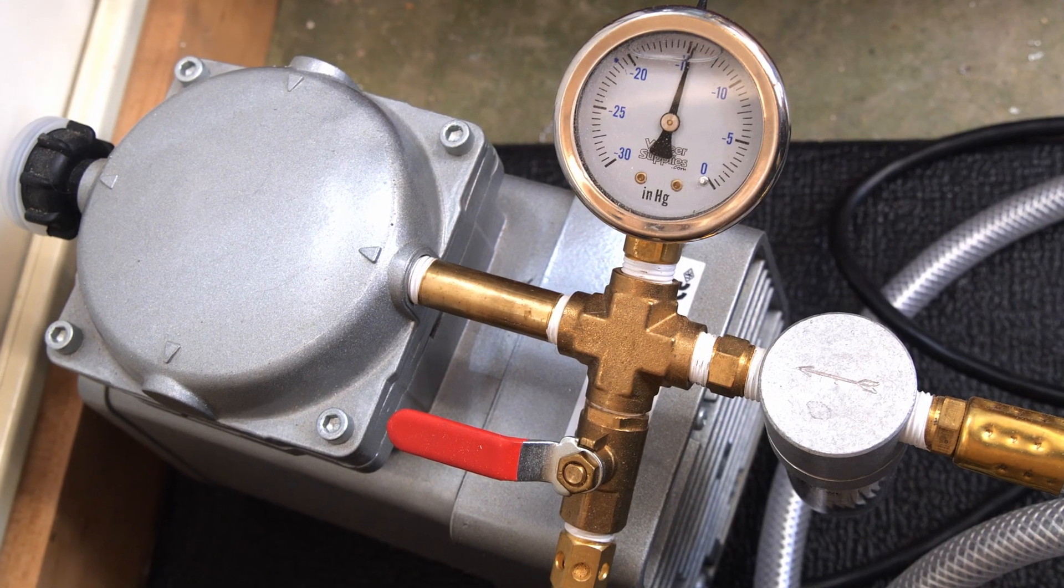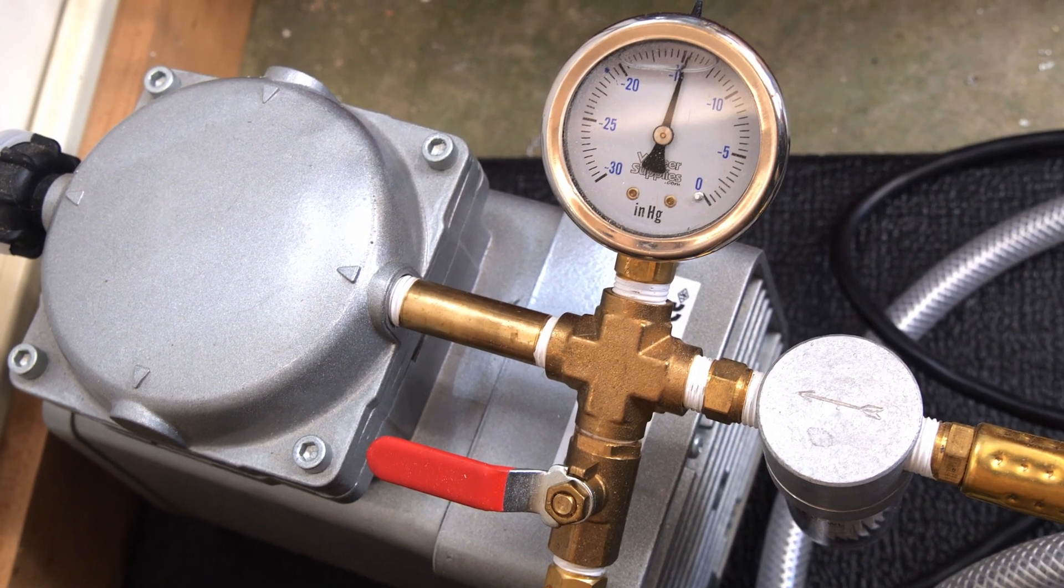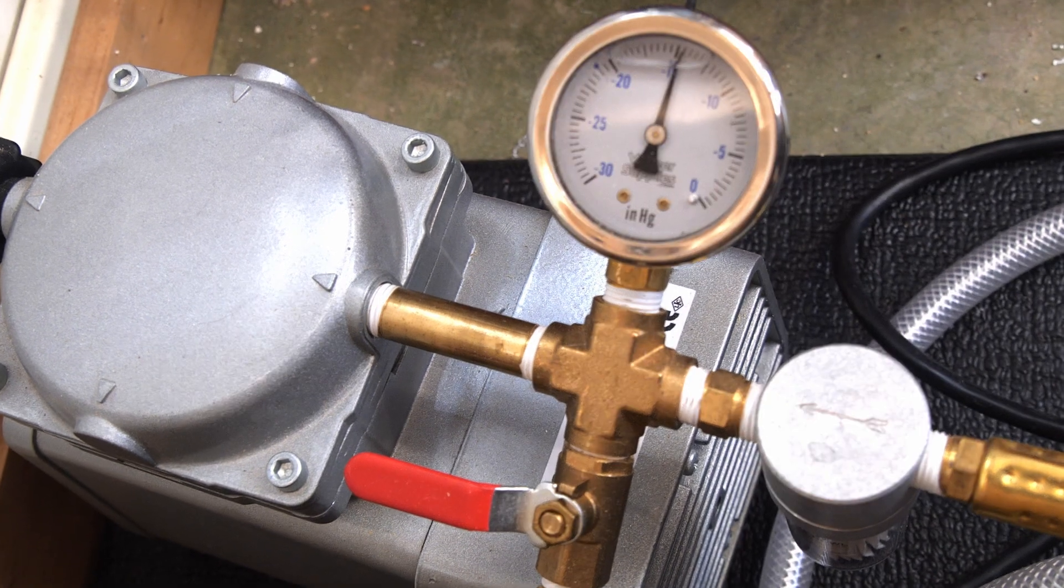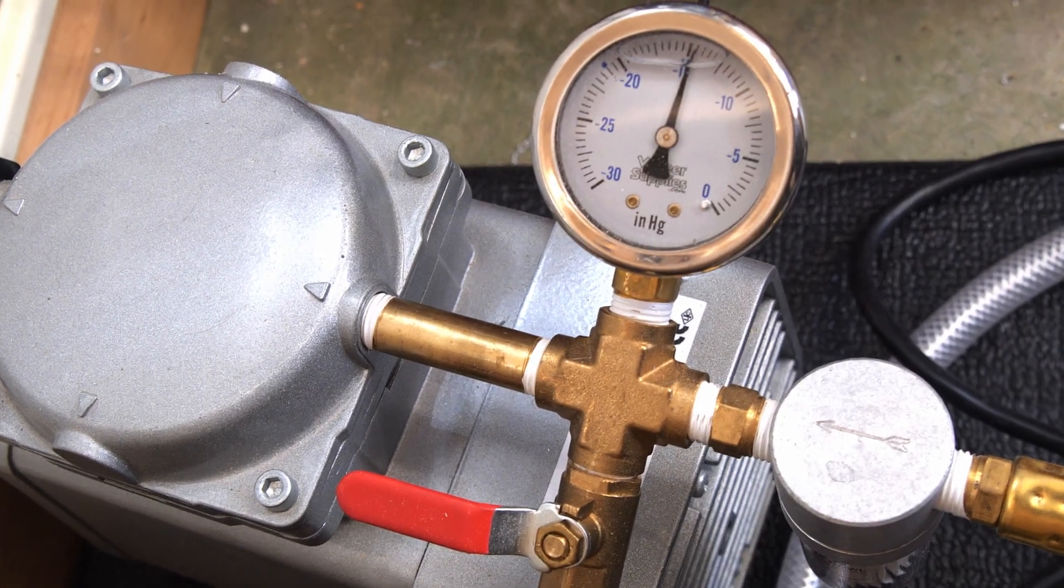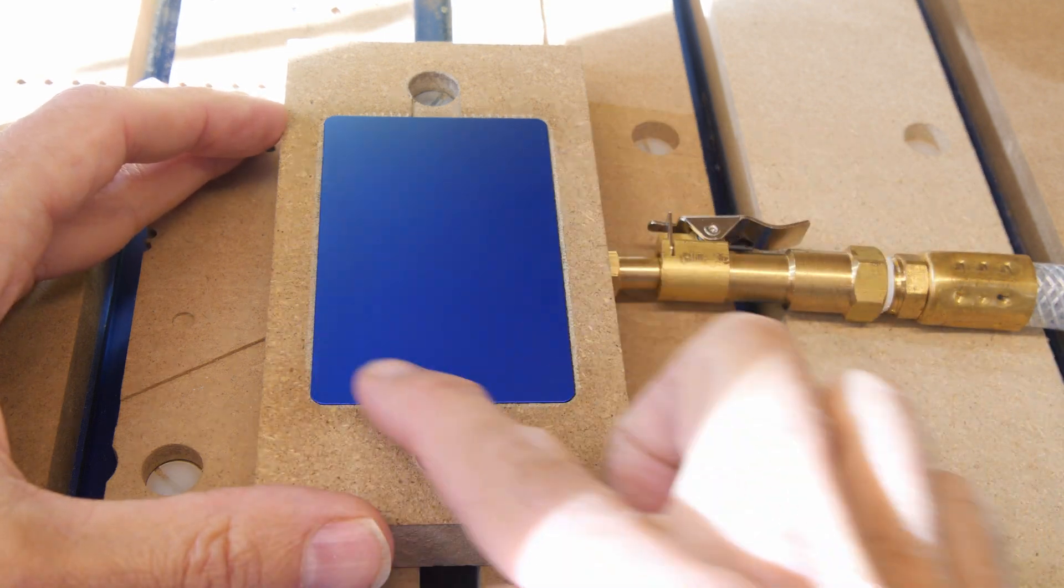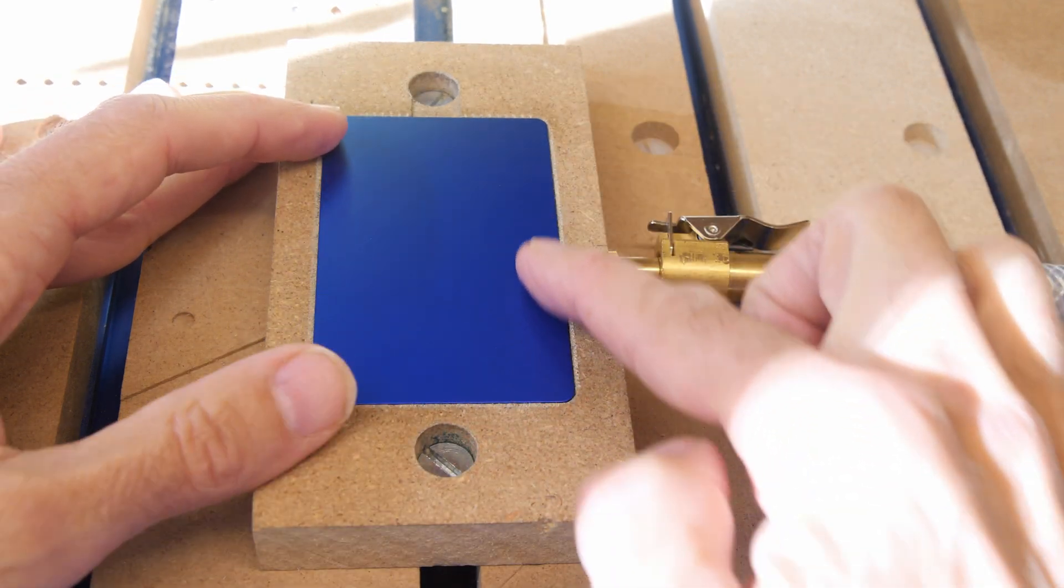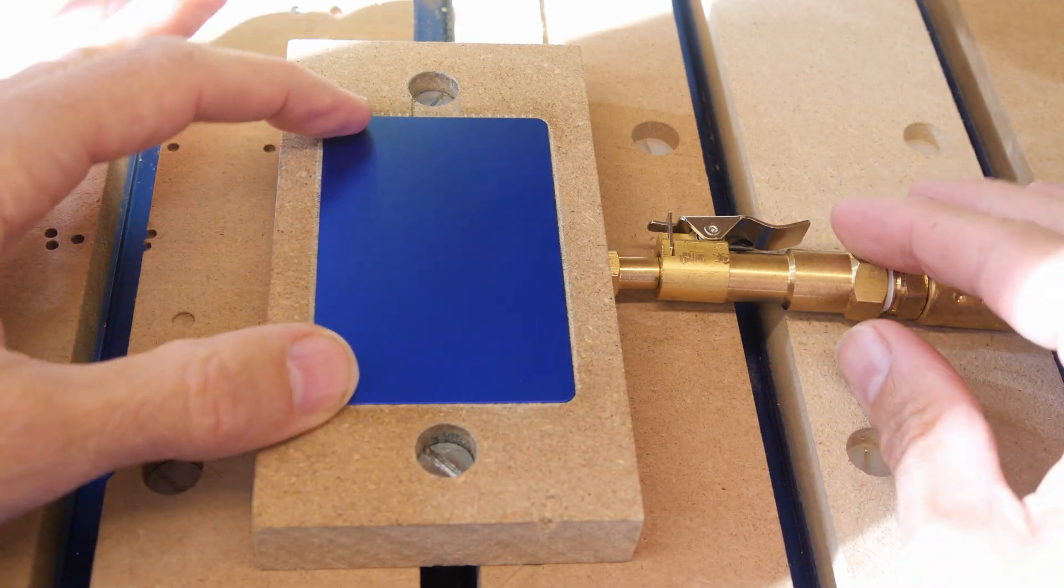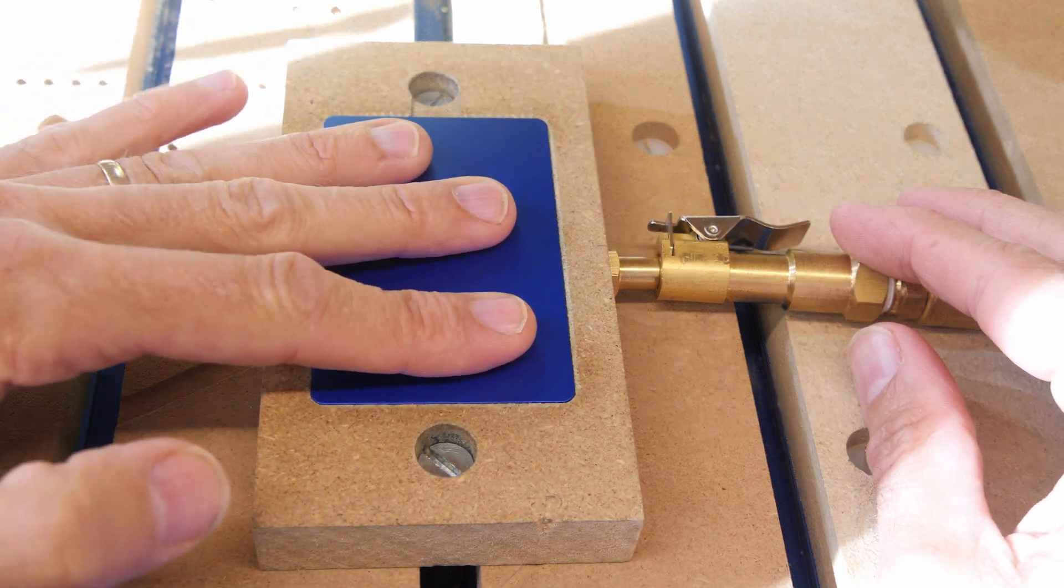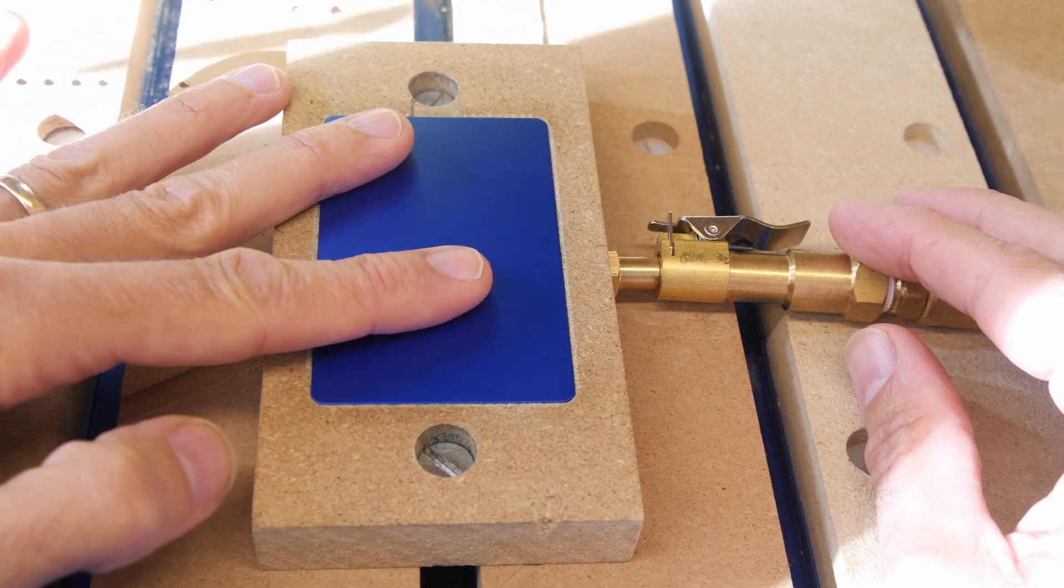The seal is not perfect, and I do get some air leakage through the MDF, even though it's sealed. So my vacuum pump is pulling about 15 inches of mercury vacuum. That's roughly 7.5 pounds per square inch, and the area around the gasket is about 5 square inches. So roughly speaking, I've got about 37 pounds of clamping force here, and that's more than enough.